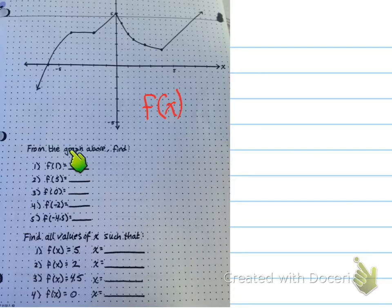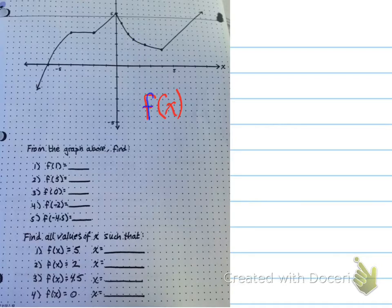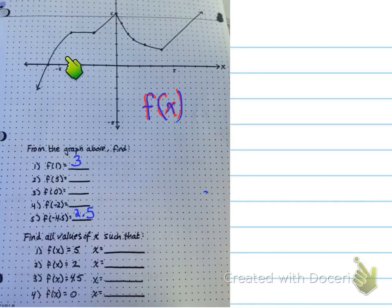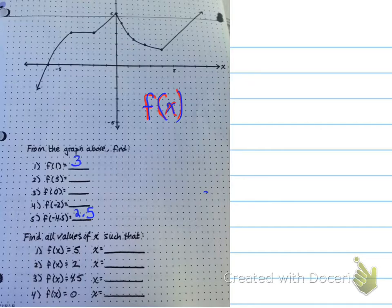From the graph, you're asked to find f(1). That means that when x is 1, what is the y value? When x is 1 — this is 1 by the way — the y value is going to be 3. So f(1) is 3. Then we did f(-4.5). When we look over here at negative 4.5, we go up — what is the y value? The y value is 2.5. And that's literally what you have to do for this part of the problem.